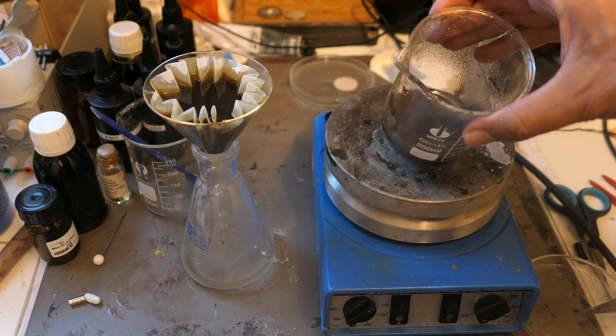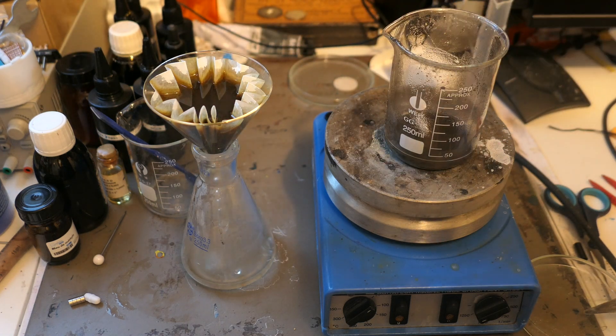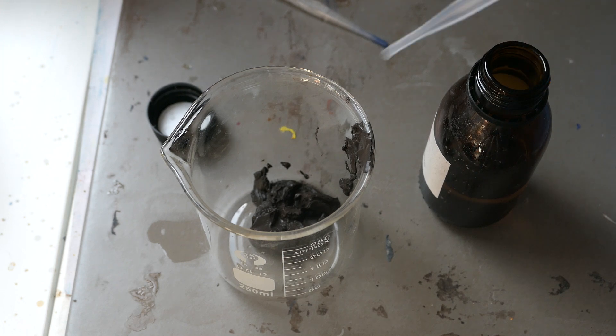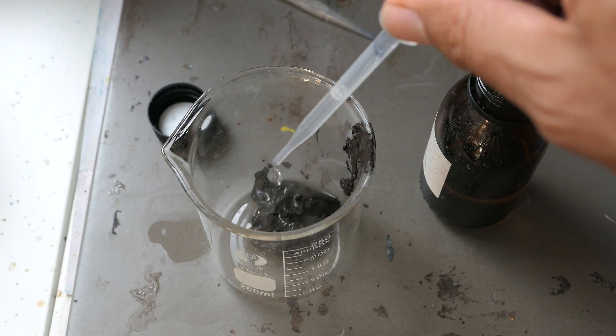In the end, we recover a dark brown paste, our silver oxide. This silver oxide will form silver nitrate by adding nitric acid once more.